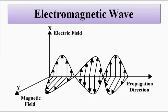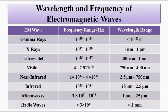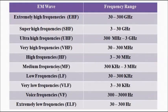All electromagnetic waves can be divided on the basis of wavelength or frequency. This categorization gives us the electromagnetic spectrum, showing different categories of electromagnetic waves with their frequency and wavelength ranges.